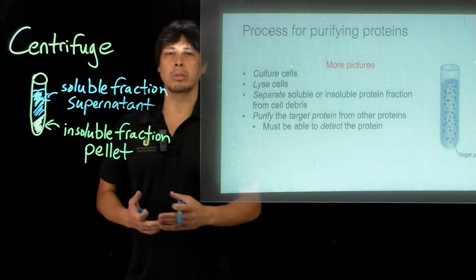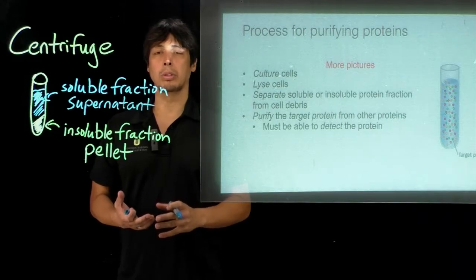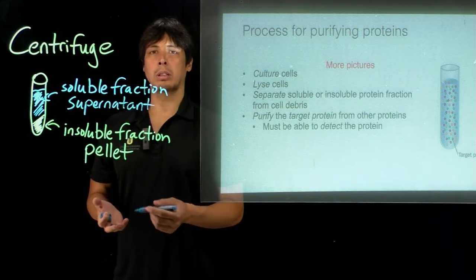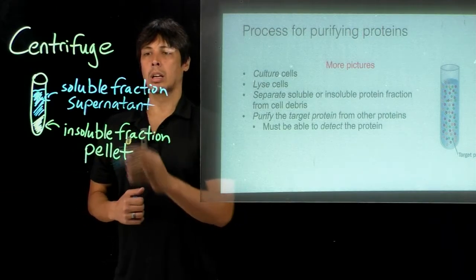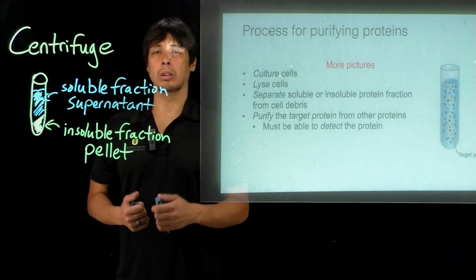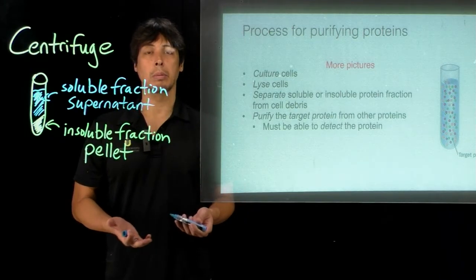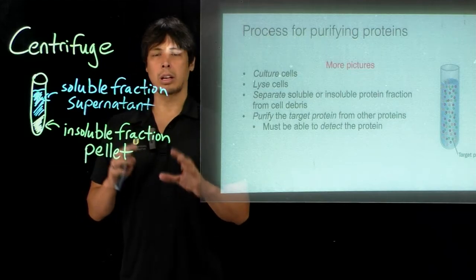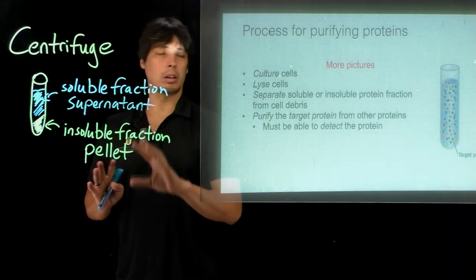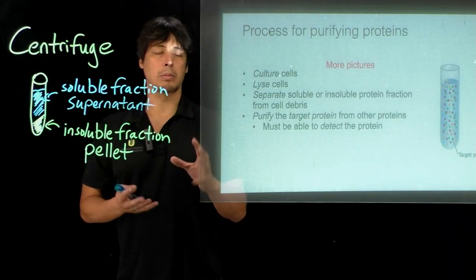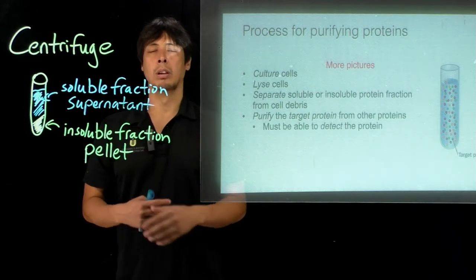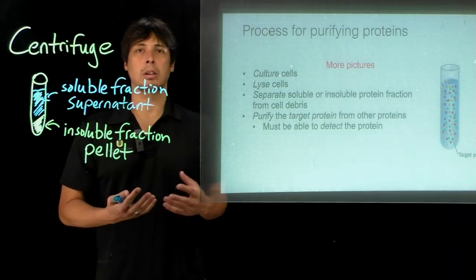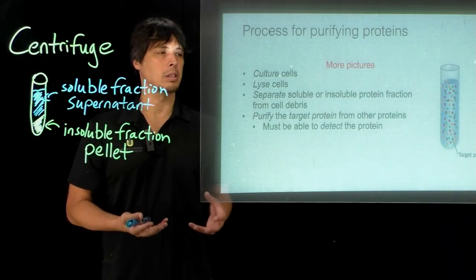Depending on what type of protein we're looking at, we'll either keep the supernatant or keep the pellet. If it's a soluble protein — something we would expect to see in the cytosol — we'll keep the supernatant. If it's insoluble or in the insoluble fraction, such as a membrane protein, then we would keep the pellet. After we clear out the cell debris, we now have to purify our protein from other proteins that are within the cell, and this is a large part of what you need to do first before you can actually study a protein.